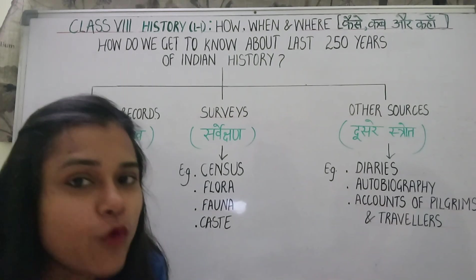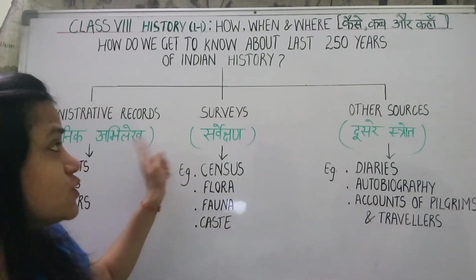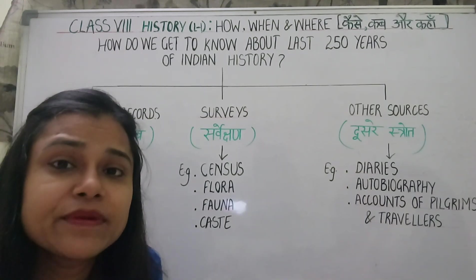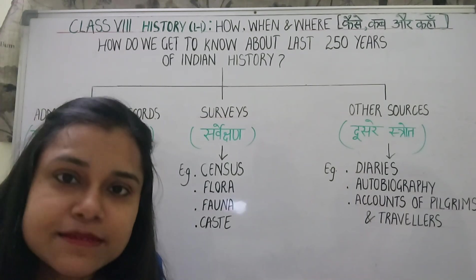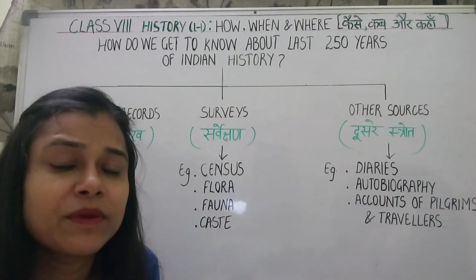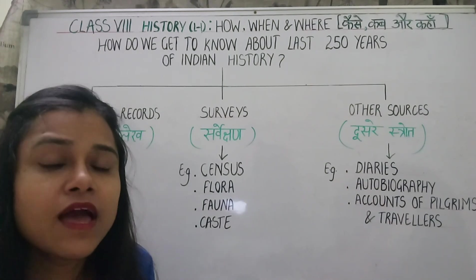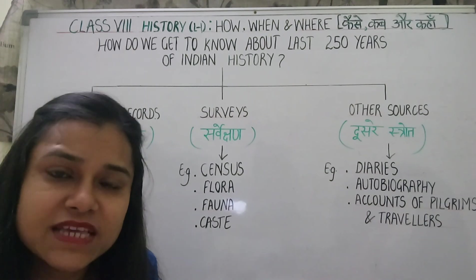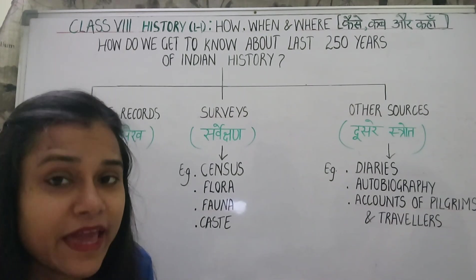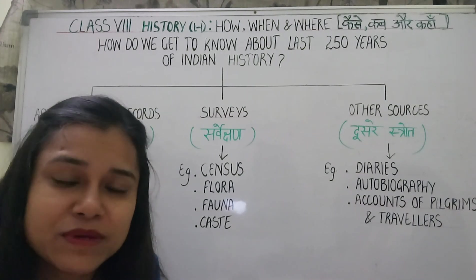These surveys and administrative records are still available today. These two are official sources — the work of the government. The government preserved all these things, and today they are available in our museums, libraries, and archives. There is also a lot of information from old newspapers.